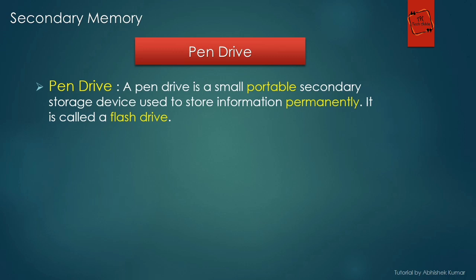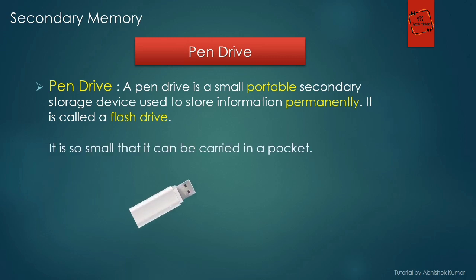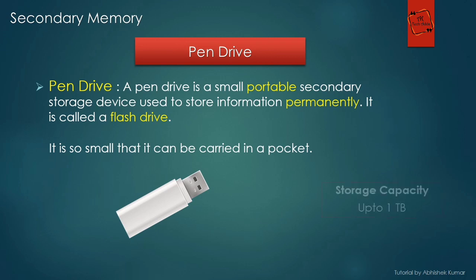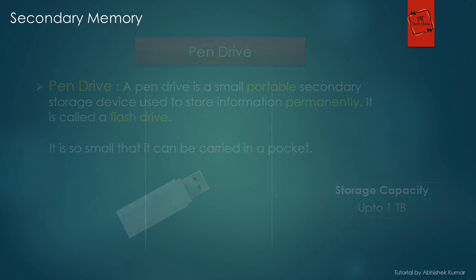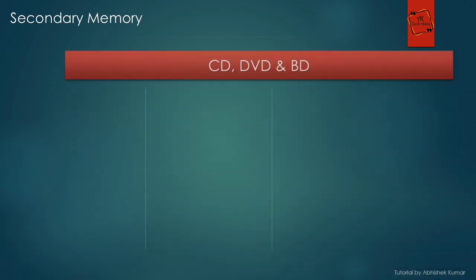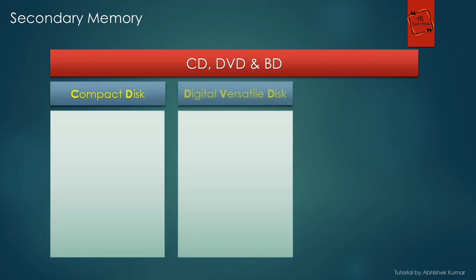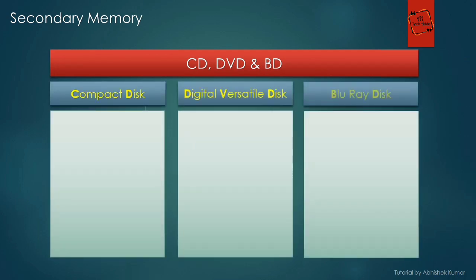Our next secondary storage device is the pen drive. This is a small, portable storage device that can store your data permanently. Being a portable or external storage device, it becomes very easy to carry your data. You can get a pen drive with a storage capacity of up to 1 TB.